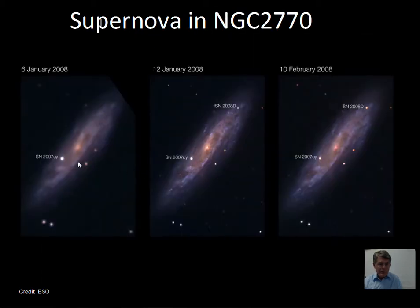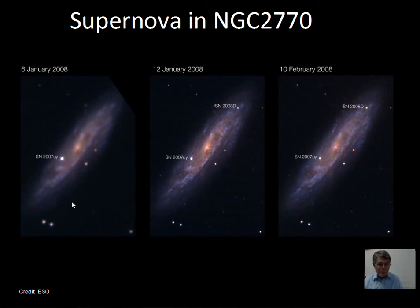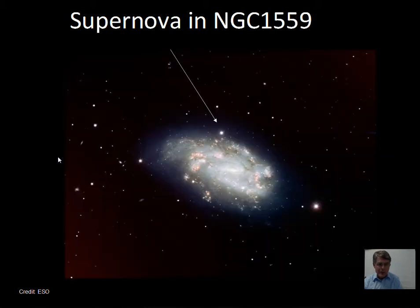Here's a supernova in NGC 2770, a galaxy. You can see how bright it is compared to the nucleus of the galaxy — it's brighter than the nucleus. Then you can see it dimming over time, going from early January into early February. These supernovae can be isolated and observed in galaxies, and then you can calculate the distance to the galaxy. Here's another supernova with some foreground stars in the photo; this star is inside and associated with the galaxy, and allows that distance to be calculated.